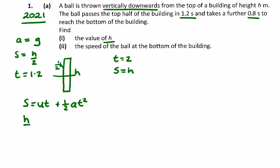So s is in terms of h here. h over 2 equals ut, which is 1.2u, plus half a t squared, so that's plus 4.9 by 1.2 squared. So we're going to get h over 2...